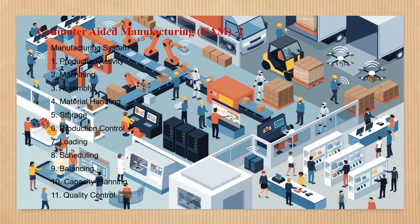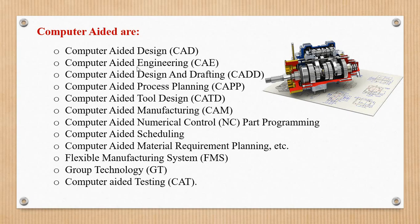The second part is Manufacturing Systems. Manufacturing Systems covers production activity, machining, assembly, material handling, storage, production control, loading, scheduling, balancing, capacity planning, and quality control.